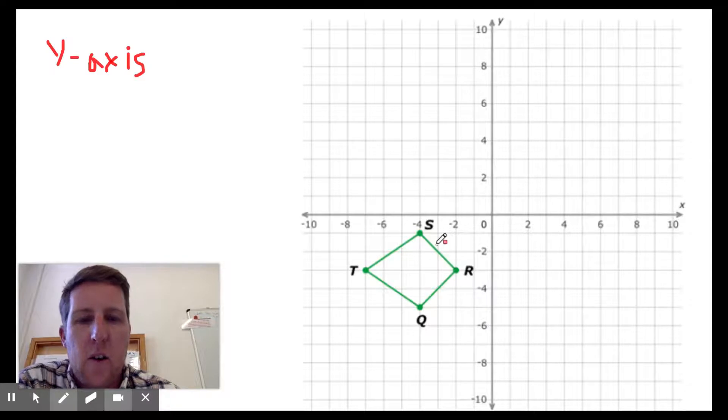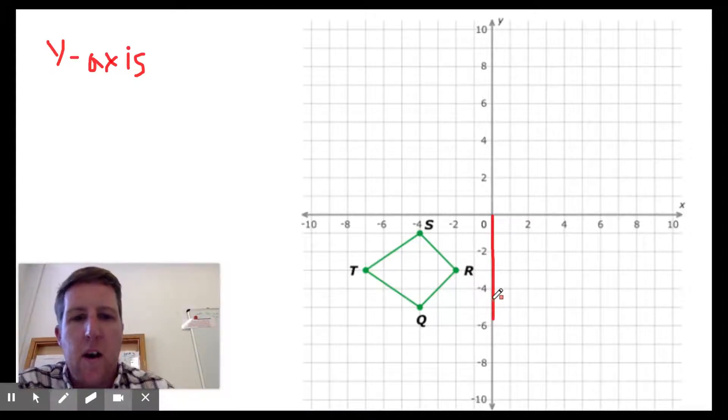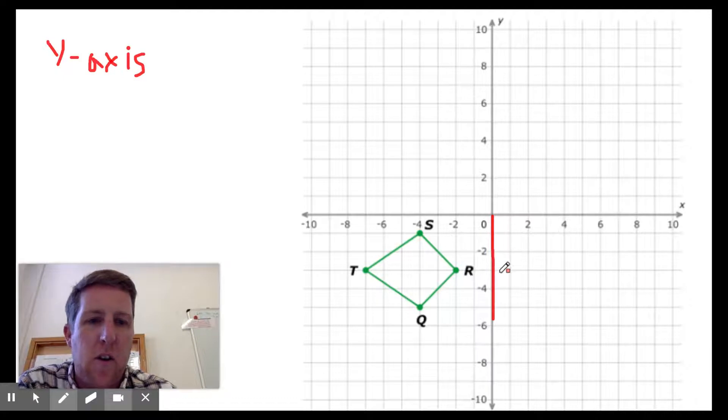So here's the y-axis. This is our reflection line here, kind of like our mirror but the shape doesn't go on this side of the mirror. It goes exactly how far away it is.